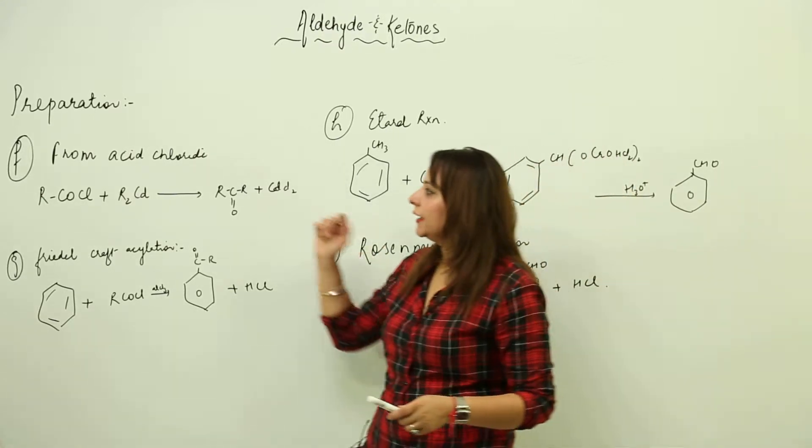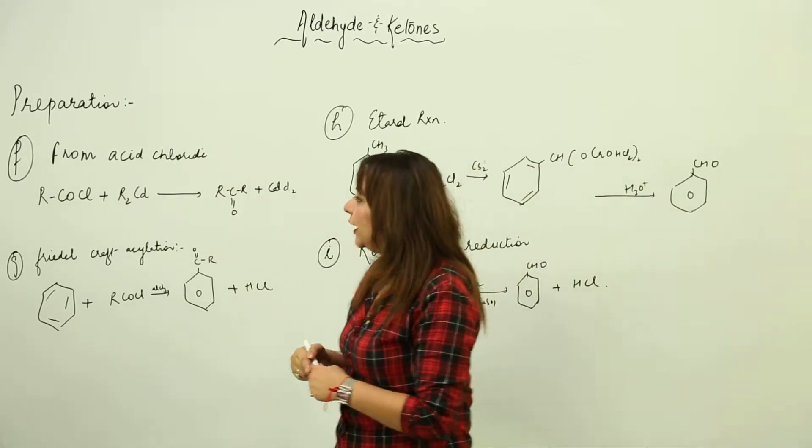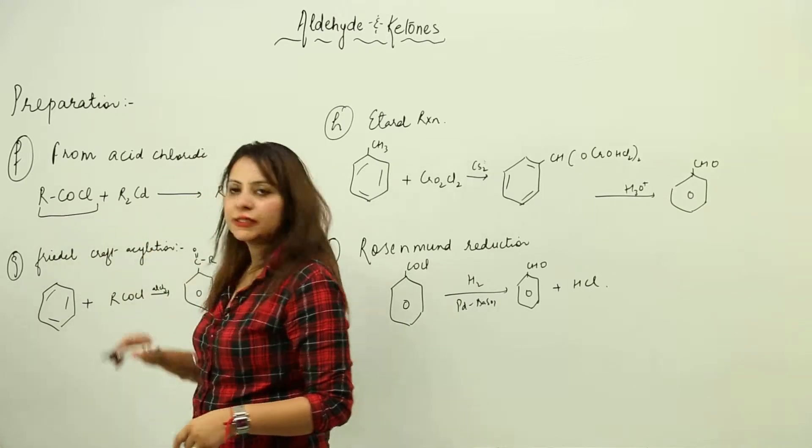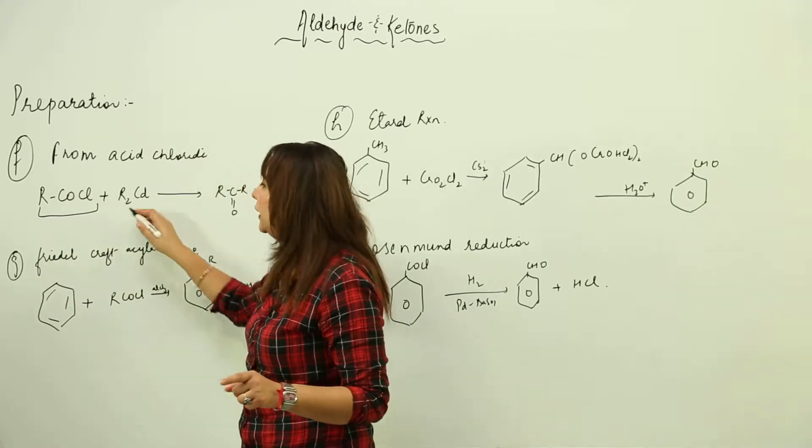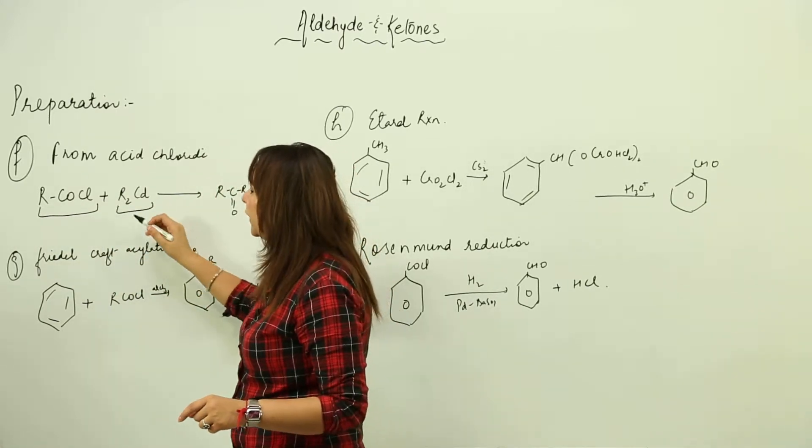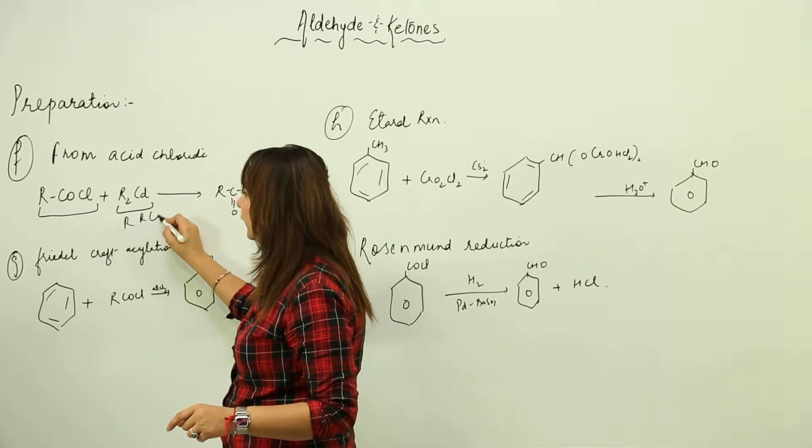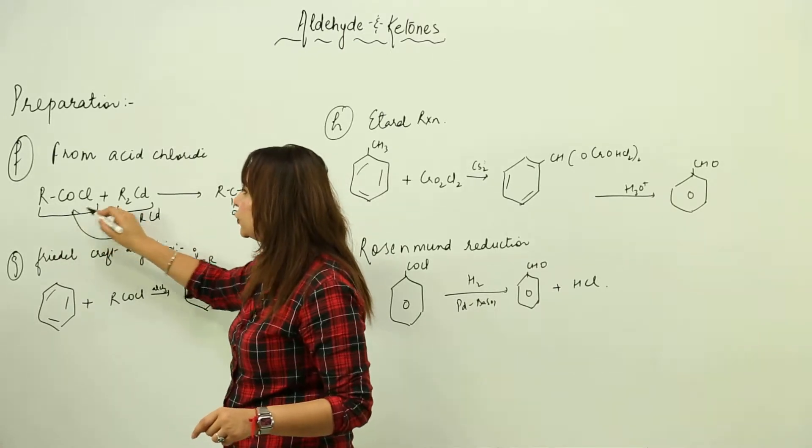Few more preparations - from acid chloride (RCOCl), we're going to react it with alkyl cadmium. When you do it, this 2R here, one R gets attached and it becomes RCOR, and we get cadmium chloride.